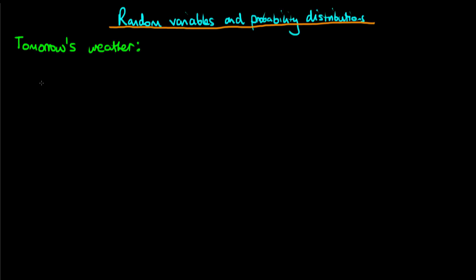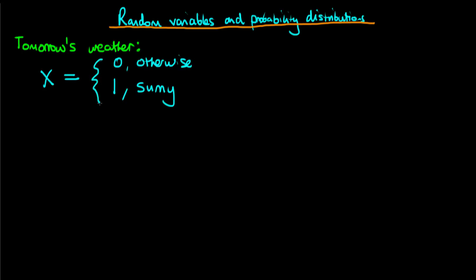To begin thinking about this problem, we're going to create what's known as a random variable x, which is equal to one if the weather tomorrow is sunny, and zero otherwise — that is, if the weather is not sunny. This variable x is what we call a random variable.